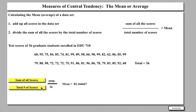The mean of those test scores is 82.16, which would probably round to 82.2. So the mean score — the one score that represents that entire set of 36 numbers — is 82.2. That is the mean score.